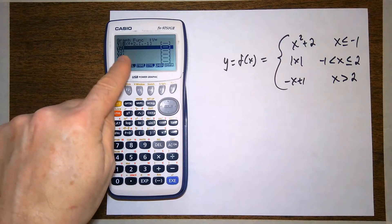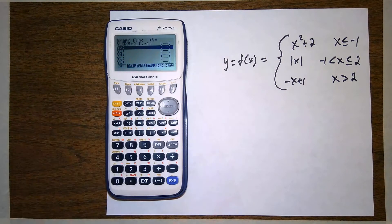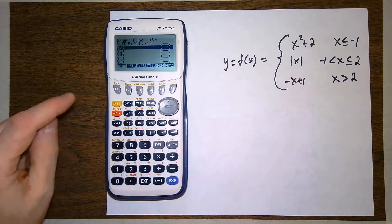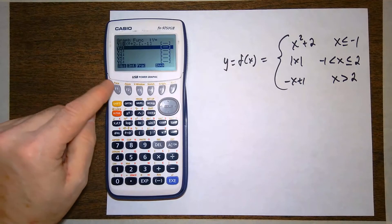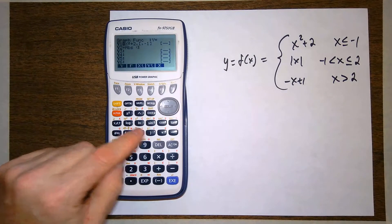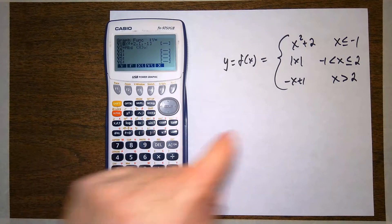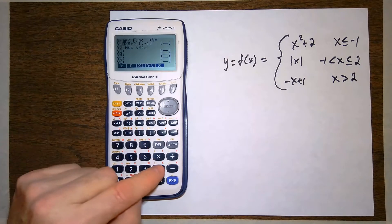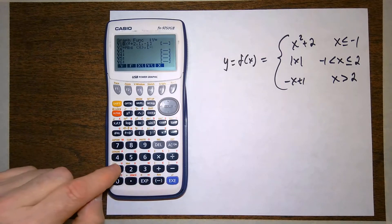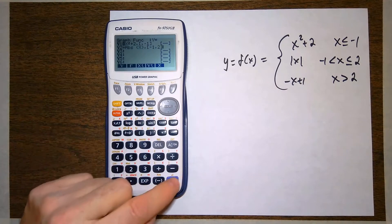So this is saying x squared plus 2 from negative infinity to negative 1. The next piece is the absolute value of x, so I'm going to go to option, f5, f1 for the absolute value. I'm going to put it in parentheses, absolute value of x, and then comma, I only want this between negative 1 and 2. So open my brackets, negative 1, comma, 2, and close brackets.